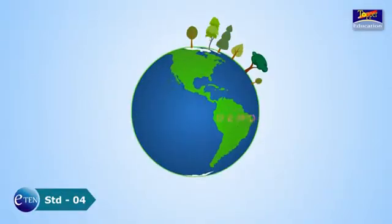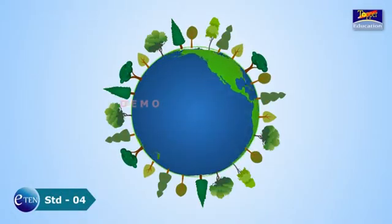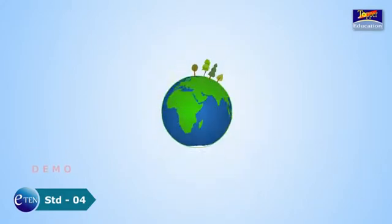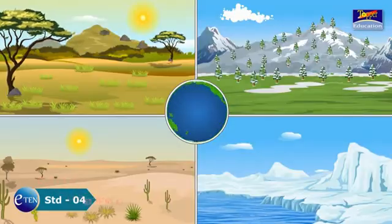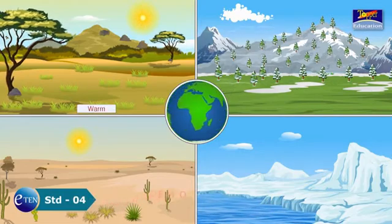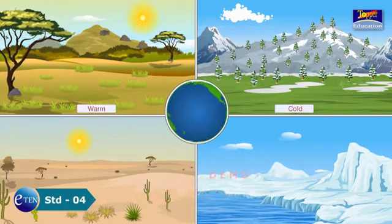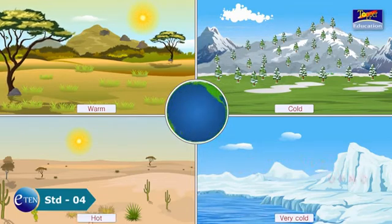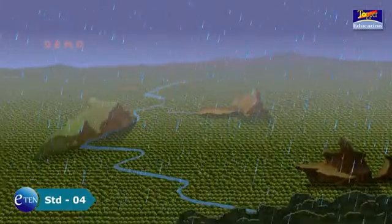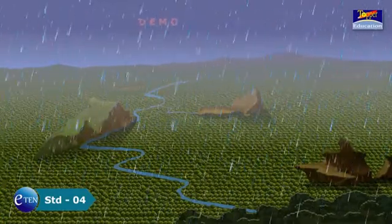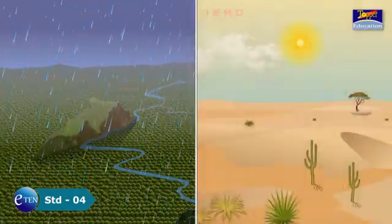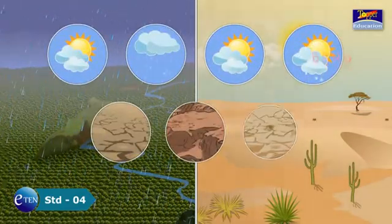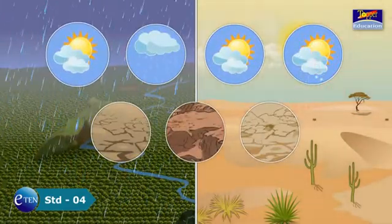Plants are found everywhere on the earth. Different places have different climate conditions. Some places are warm, some cold, others very cold while some are very hot. Some places get a lot of rainfall, while others are dry. The conditions like weather and soil affect the growth of plants.